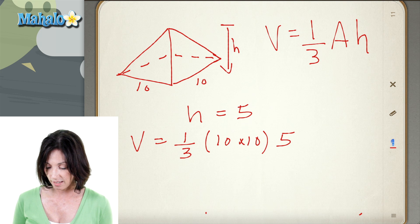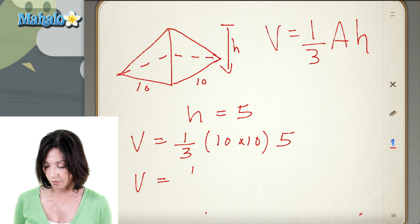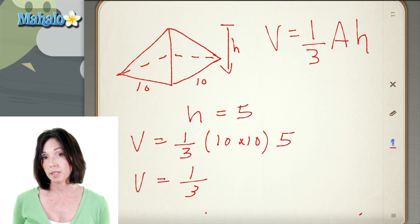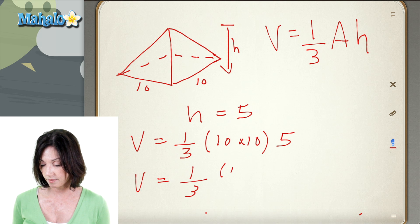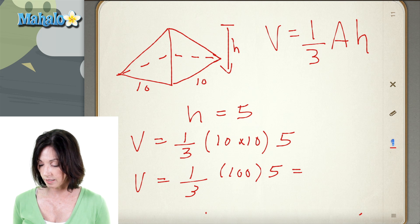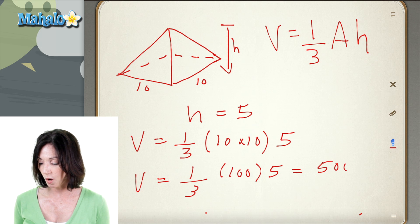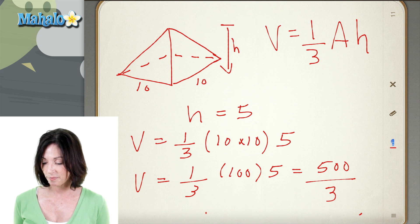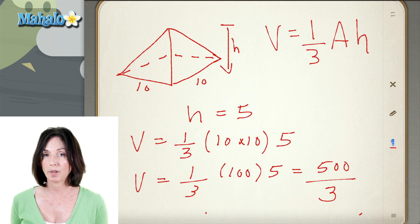So we'll just calculate it out. The volume equals one-third. Now, 10 times 10 is 100, and we still have the 5. So if I multiply this all out, I get 1 times 100 times 5 is 500 over 3. So the volume of this pyramid is 500 over 3.